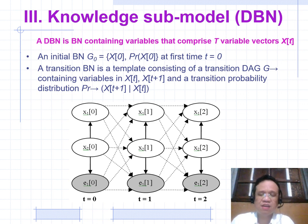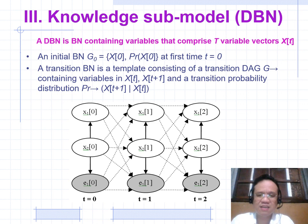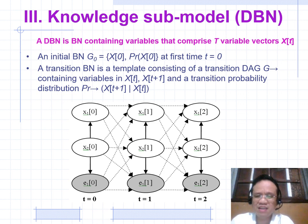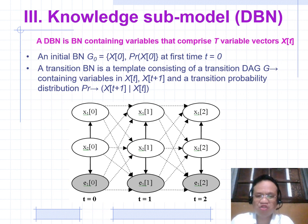A Dynamic Bayesian Network (DBN) is a Bayesian network containing variables comprising a factor: the initial Bayesian network at time zero, and the transition Bayesian network, which consists of a choice and an agency controlling variable, along with the transition probability distribution across states ST1 through ST.